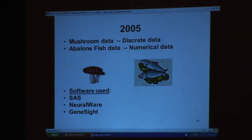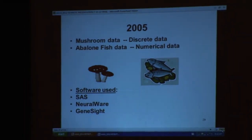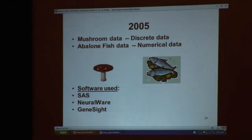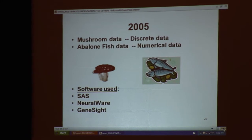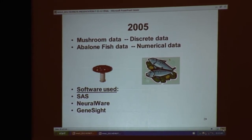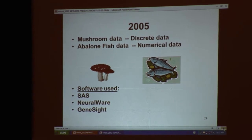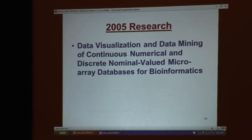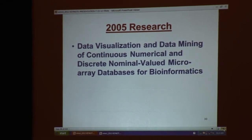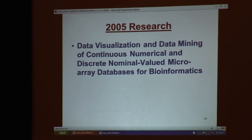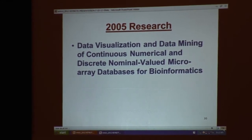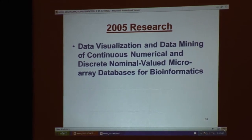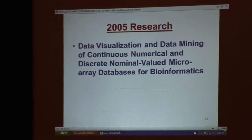In 2005, I looked at mushroom data and abalone fish data. The difference between these is that mushroom data was discrete data and abalone fish data was numerical data. I used SAS Enterprise Miner, NeuralWare, and GeneSight software. The title of the paper I published with Dr. Zhang, where I'm lead author, was "Data Visualization and Data Mining of Continuous, Numerical, and Discrete Nominal Value of Microarray Databases for Bioinformatics." We received one of the three highly commended paper awards for 2006 from Emerald Journals for this paper.